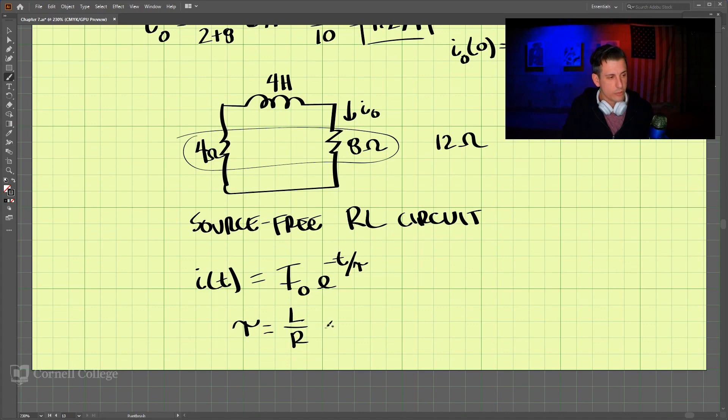That is equal to L over R, which we have then 4 is 4 Henry, divided by our resistance is 12, which is 1 third. So we can plug that in here. So we know our I-naught here is 1.2.